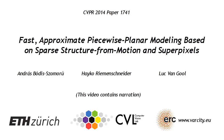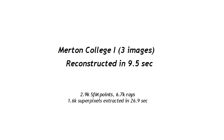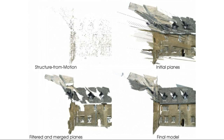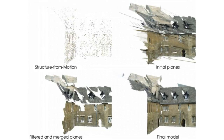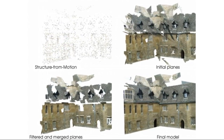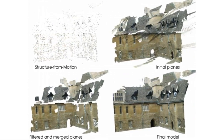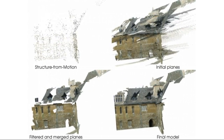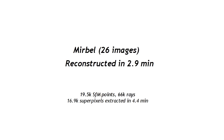Our work addresses the problem of reconstructing man-made scenes directly from sparse structural motion data and presents a novel and efficient method to produce a lightweight piecewise planar polygonal surface model by combining superpixels and the underlying sparse 3D point cloud.